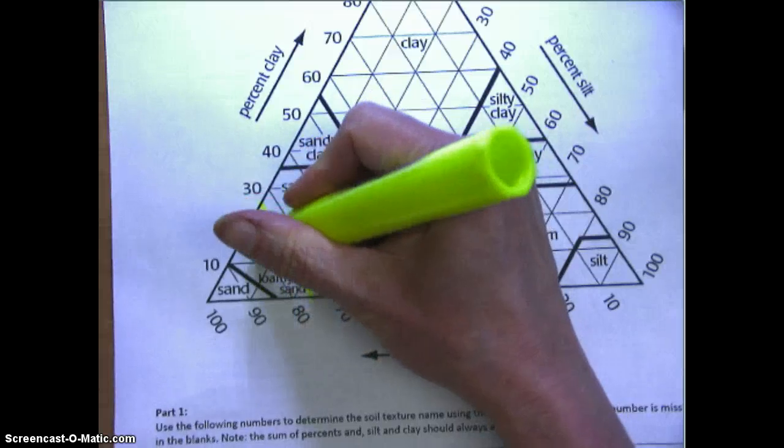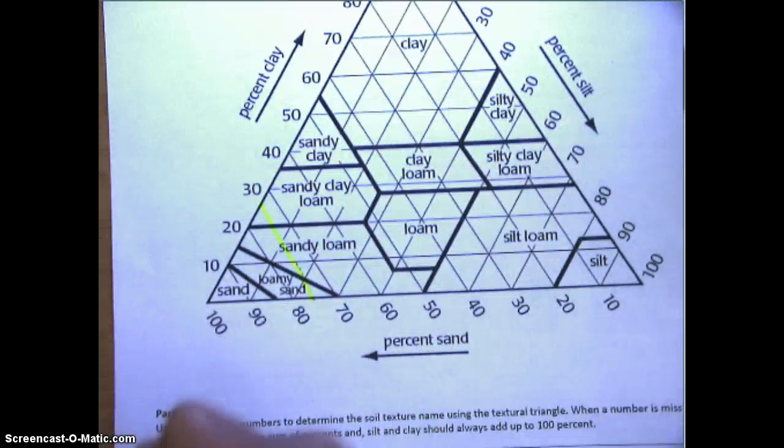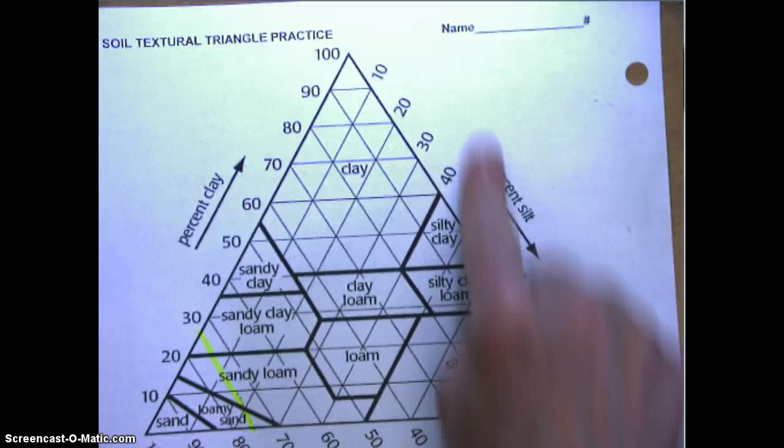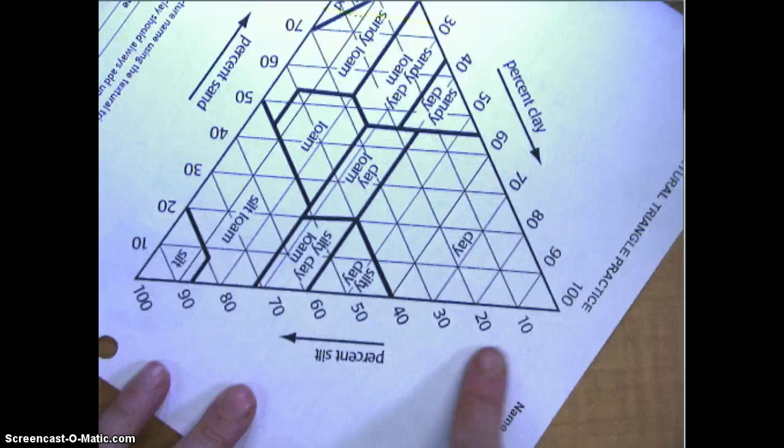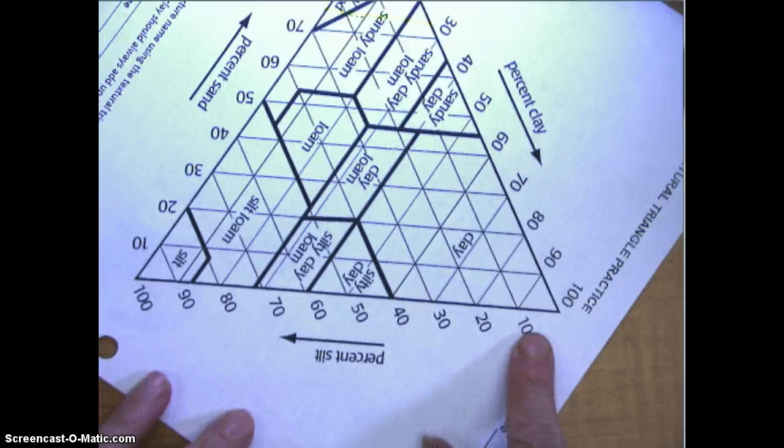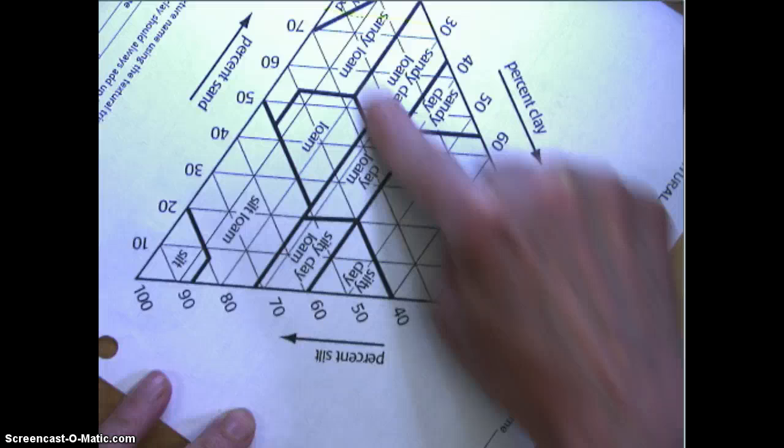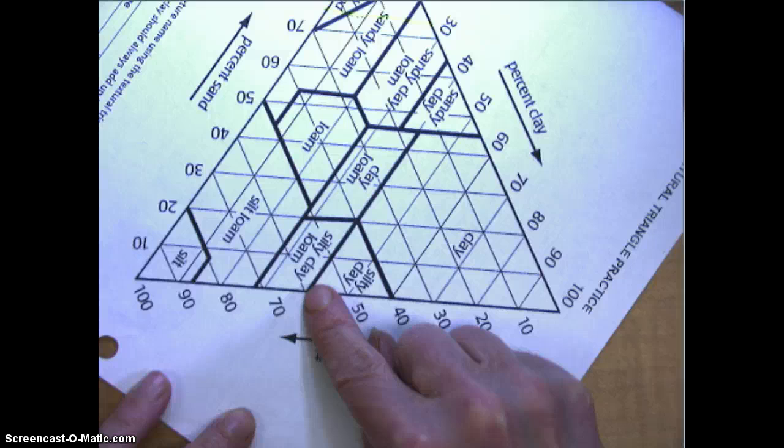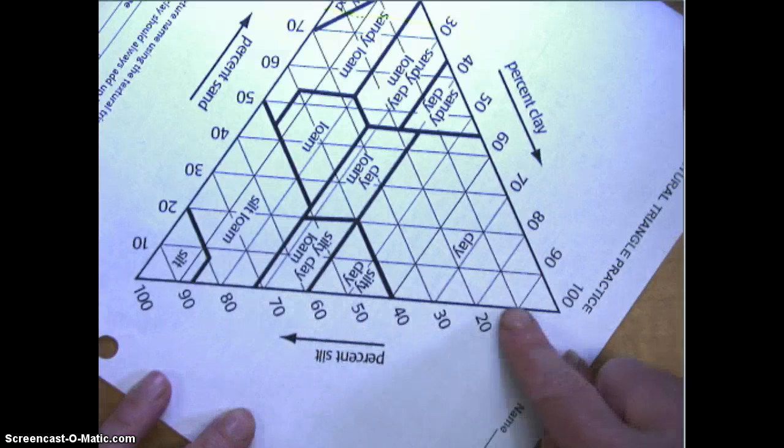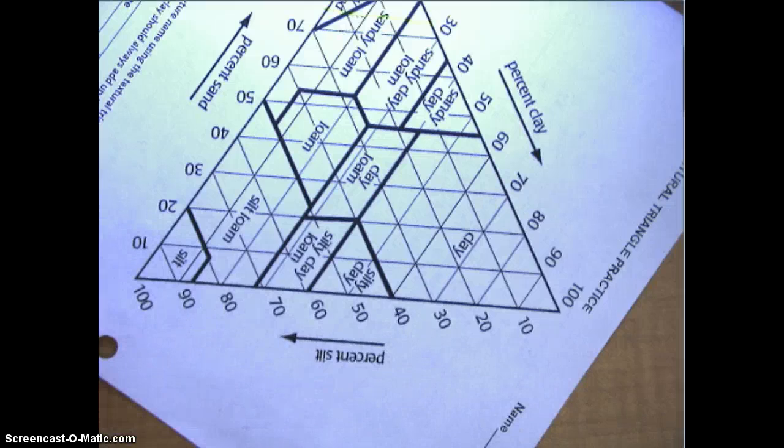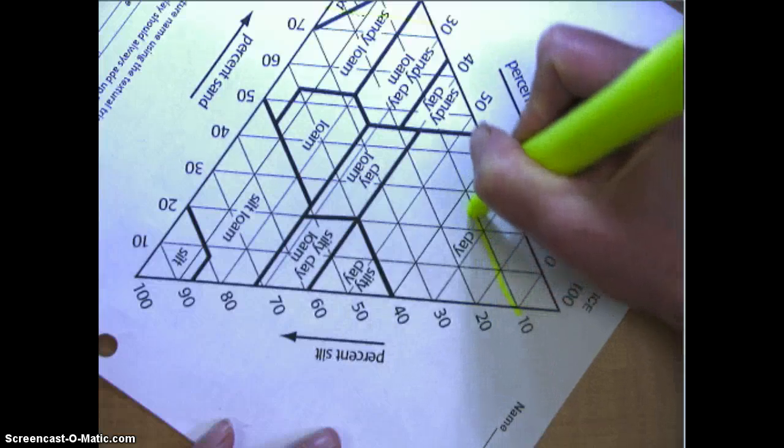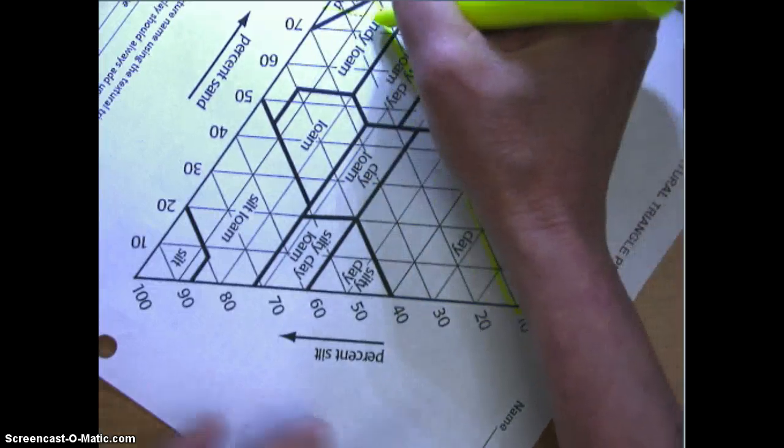You can use a highlighter if you'd like. You're going to go between the lines that are 70 and 80. Then you're going to figure out where's 10% silt. You'll find the silt line - that's 10% silt. Anywhere along this line is 10%, 20%, 30%. You're always going to look at the line on the left.